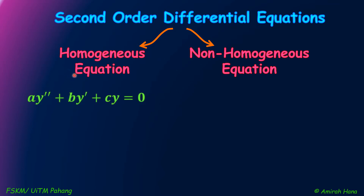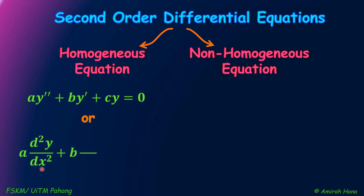Under homogeneous equation, we have A Y double prime plus B Y single prime plus C Y equals to 0, or equivalently A D²Y/DX² plus B DY/DX plus C Y equals to 0.